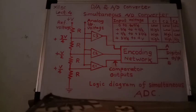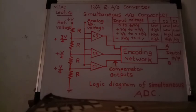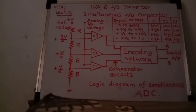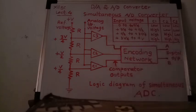The advantages of the simultaneous ADC are that it is simple in construction and has an extremely fast conversion rate, which is why it is also called a flash converter. The disadvantage is that a large number of comparators are required, making the system bulky and costly. Therefore, simultaneous ADCs of more than 3 bits are generally not used.